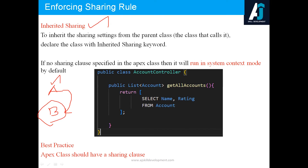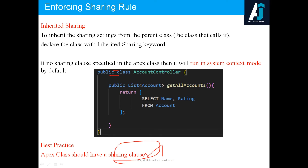The best practice is that every Apex class should have a sharing type declared. You should not write classes without specifying a sharing type. Whether you use with sharing or without sharing, always declare it explicitly. This is all about record level security. If you want to apply record level security, the class should be written with the with sharing keyword.